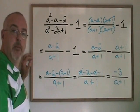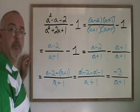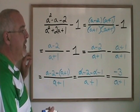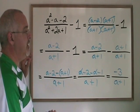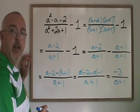This fraction cannot be simplified further. There are no more cancelling opportunities. So I am finished. The final answer for this subtraction is negative 3 over a plus 1.